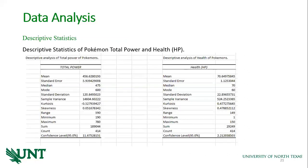The descriptive statistics of the Pokemon for total power and health can be done using data validation. These validations are done by getting statistical and arithmetic calculations. I have used it for the total power and health columns, getting statistical outputs such as mean, standard error, median, mode, and more for the total power column.